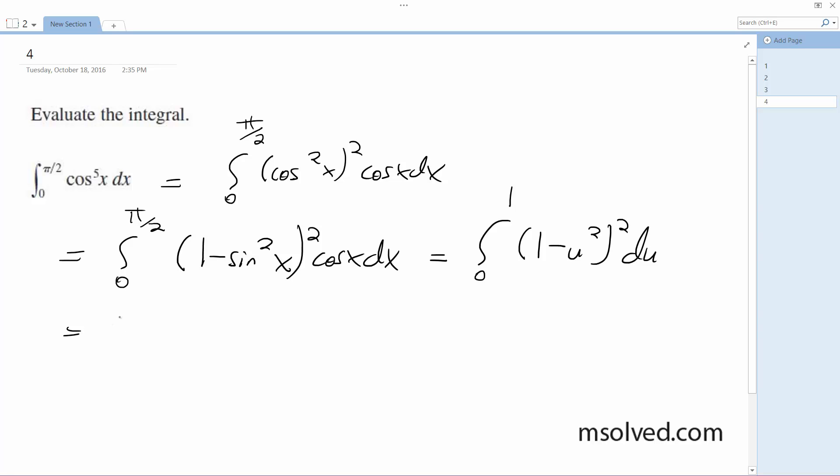And then we're going to end up with 0 to 1 from 1 minus 2u squared plus u to the fourth du is equal to u minus 2 thirds u cubed plus 1 fifth u to the fifth.